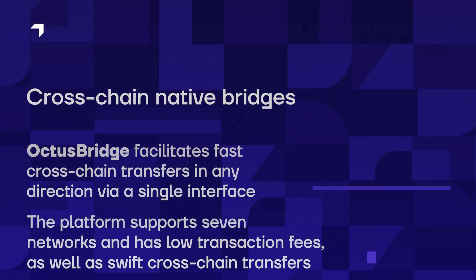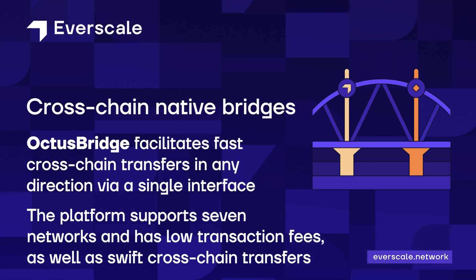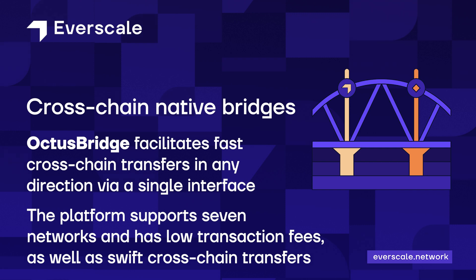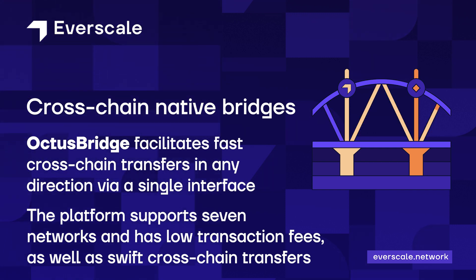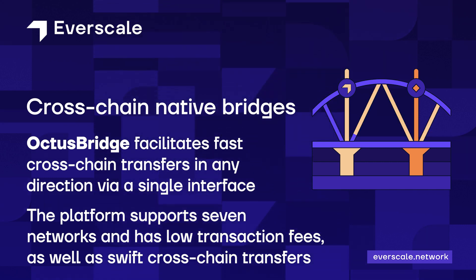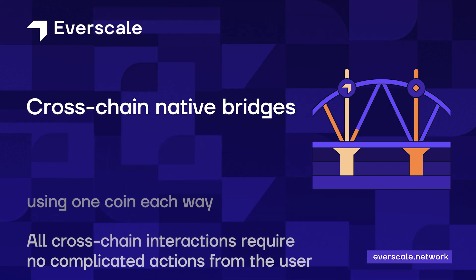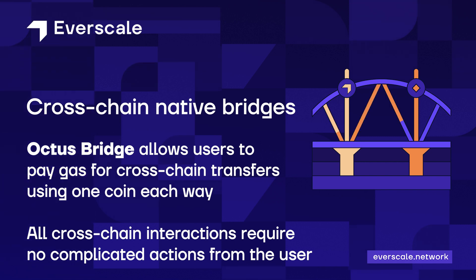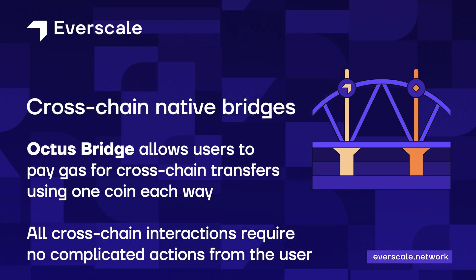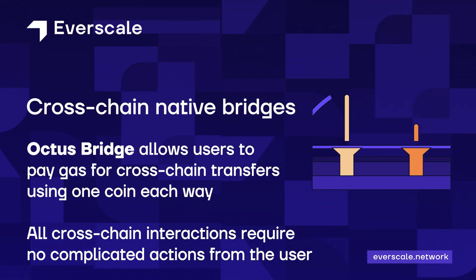Octus Bridge facilitates fast cross-chain transfers in any direction via a single interface. The platform supports seven networks and has low transaction fees as well as swift cross-chain transfers. Octus Bridge allows users to pay gas for cross-chain transfers using one coin each way, and all cross-chain interactions require no complicated actions from the user.